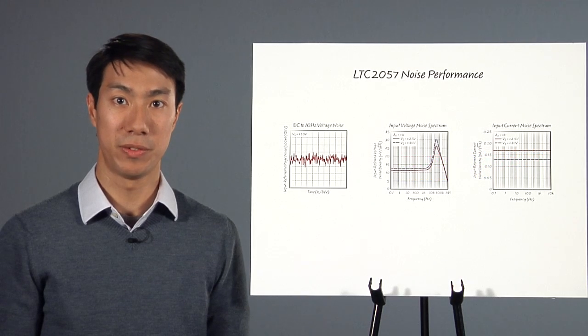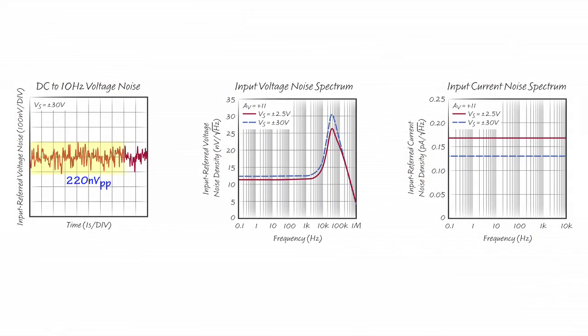In addition, zero-drift amplifiers have great low-frequency noise performance and suppressed 1 over f noise down to very low frequencies. This complete set of characteristics will allow you to reduce or eliminate the need for periodic calibration.